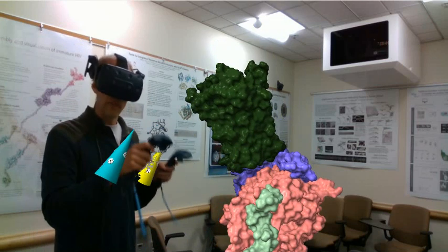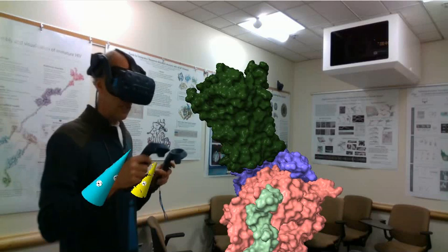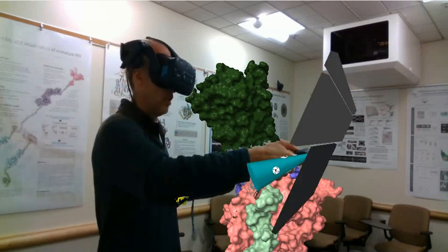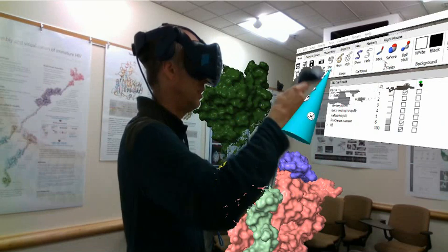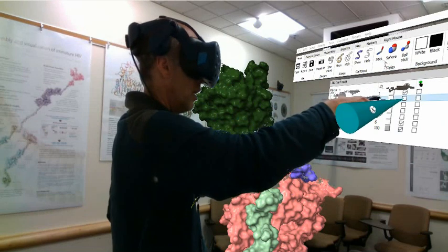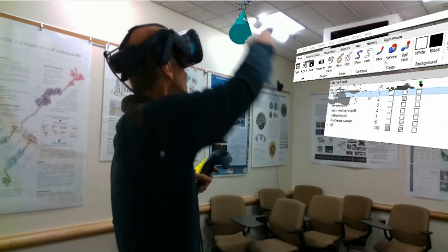We're going to take a look at some of the different opioids that can bind to this receptor. First, let's take a look at morphine. I'm going to bring up morphine here. Show morphine. Let's hide our receptors. Here's morphine.